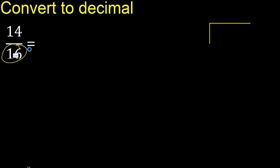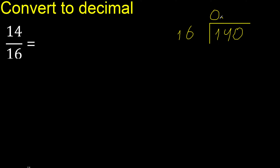14 divided by 16. 14 is less, therefore complete — always complete with 0 here. 0 point. 16 multiplied by which number is nearest to 140 but not greater? 16 multiplied by 9 is 144, that is greater. 16 multiplied by 8 is 128.